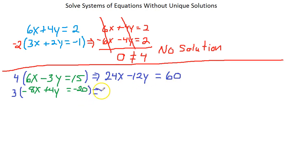Okay. 3 times negative 8x is negative 24x, 3 times 4y is plus 12y. See, we're getting that same situation. 3 times negative 20 is negative 60.